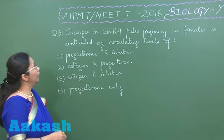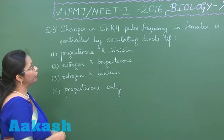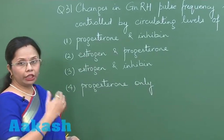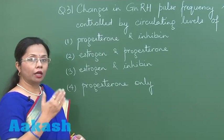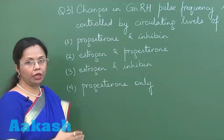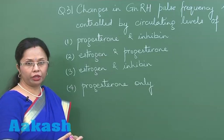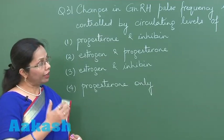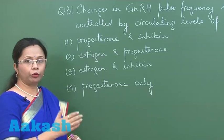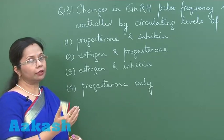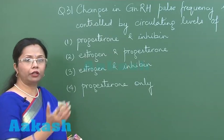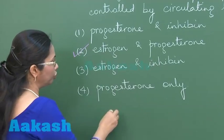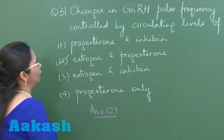In question 31, the changes in GnRH pulse frequency in females is controlled by circulating levels of estrogen and progesterone. During the menstrual cycle, there is positive feedback by estrogen towards ovulation. After ovulation, when the corpus luteum is formed, both progesterone and estrogen released from it exert a negative feedback on the hypothalamus and pituitary. So the pulse frequency is regulated by both estrogen and progesterone at different times of the menstrual cycle. The answer is option 2: estrogen and progesterone.